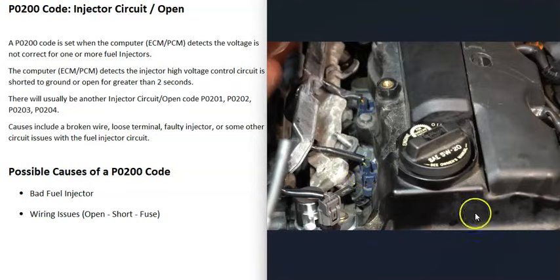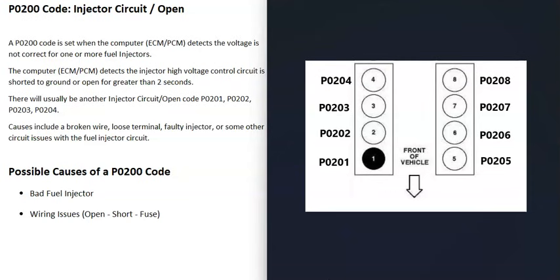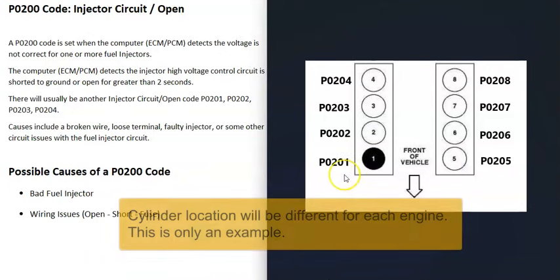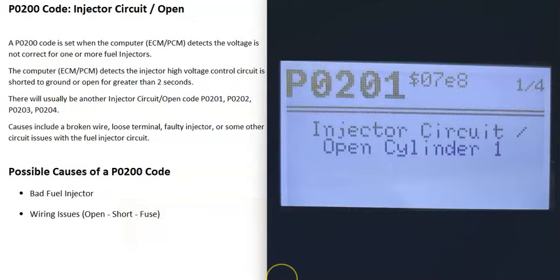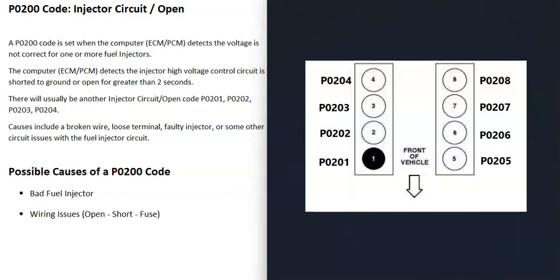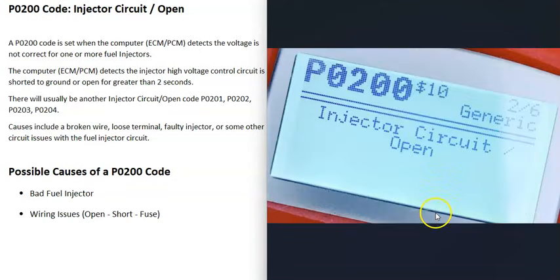When you get this P0200 code, you more than likely are going to get other codes that point to specific cylinders. For example, a P0201 points to cylinder number one, P0202 to cylinder number two, and so on. So if you're also getting a P0201 injector circuit open cylinder one, it's a good idea to focus on that cylinder one fuel injector, because that's more than likely the problem. If you're getting just one other fuel injector code, focus on that one injector and the wires going to it.